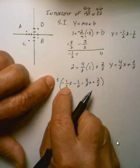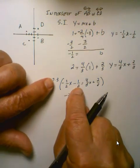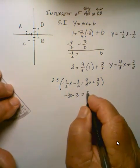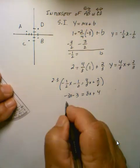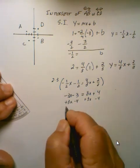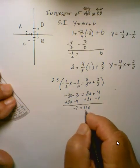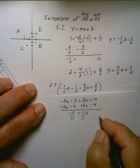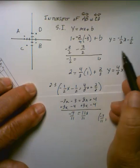We see that we have minus 3X minus 3 equal to 8X plus 4. Moving our X's and subtracting our 4, we see that 11X equals negative 7, and therefore X is minus 7 elevenths.